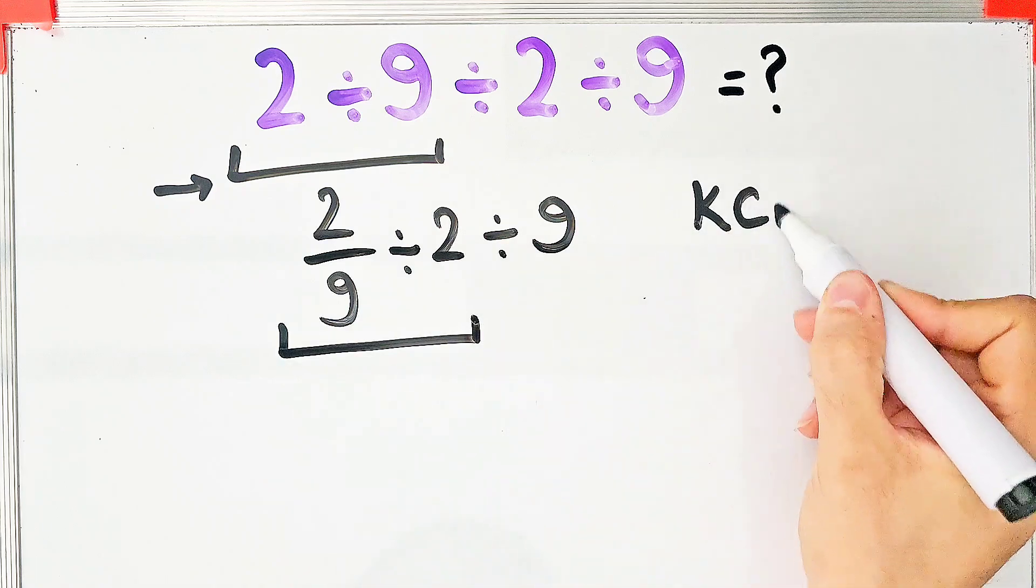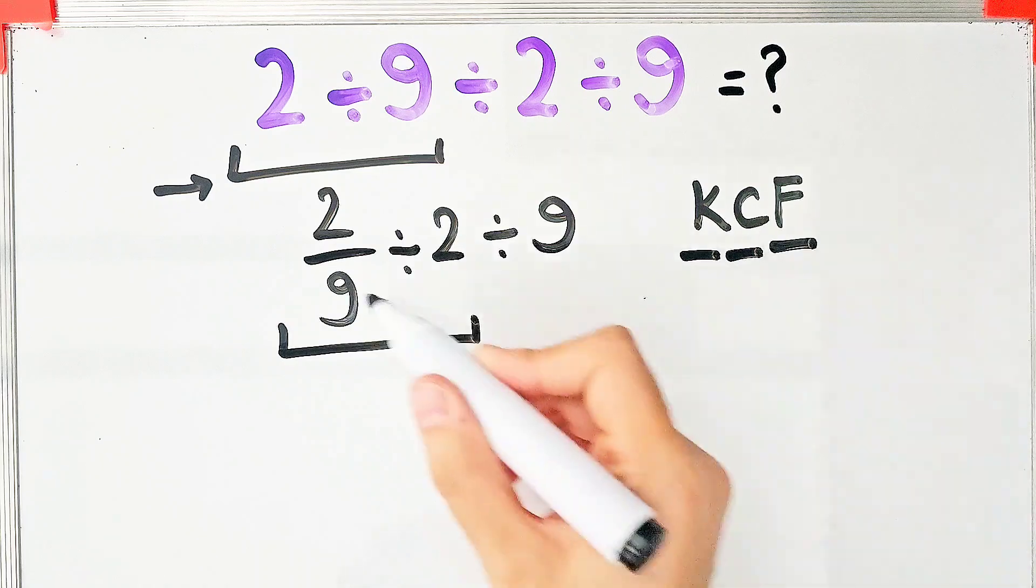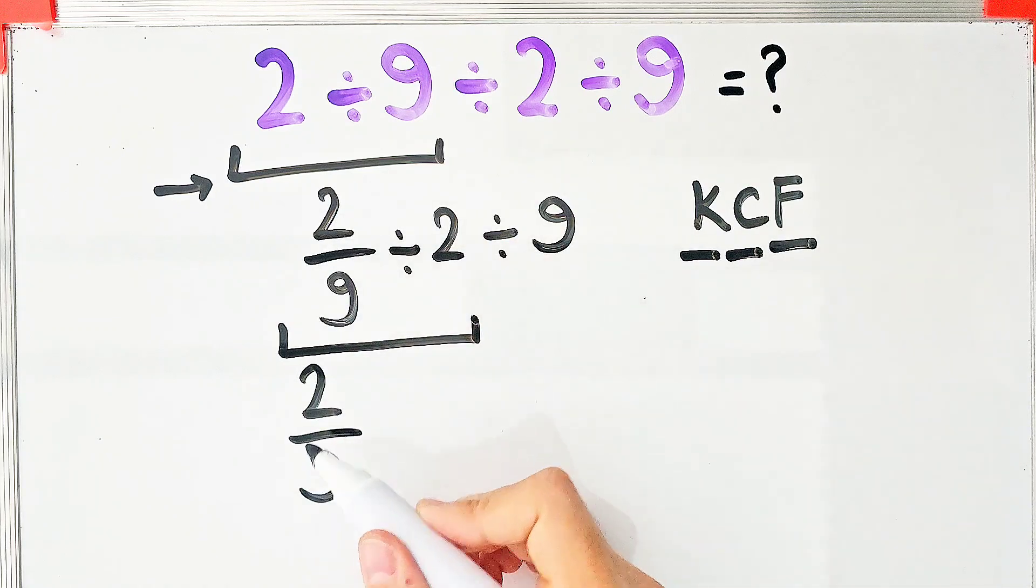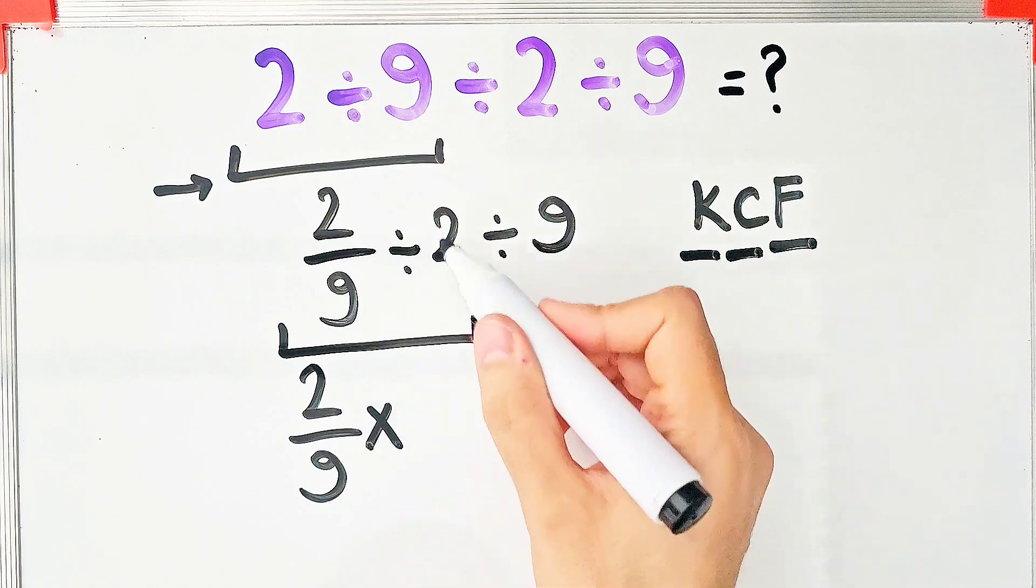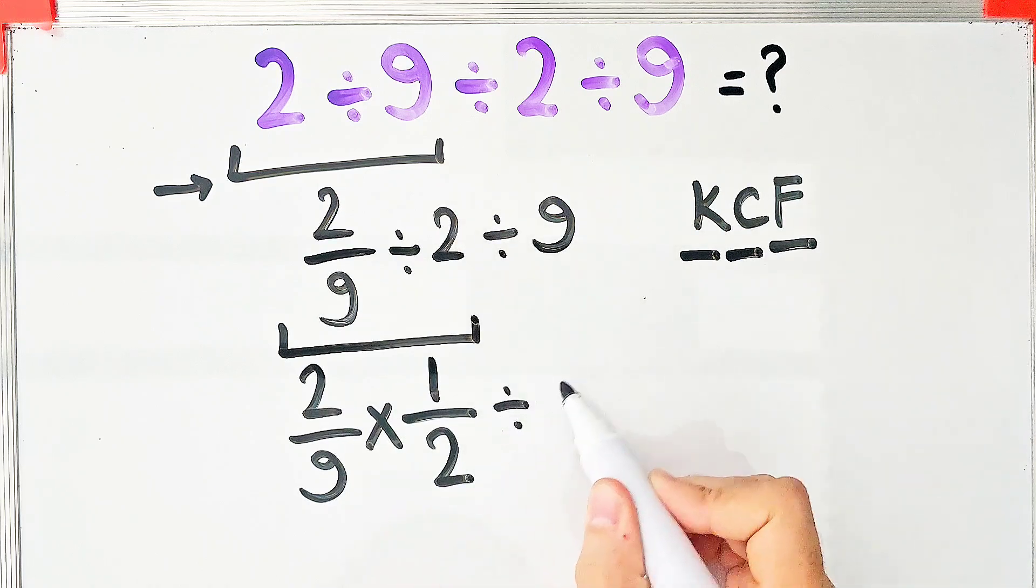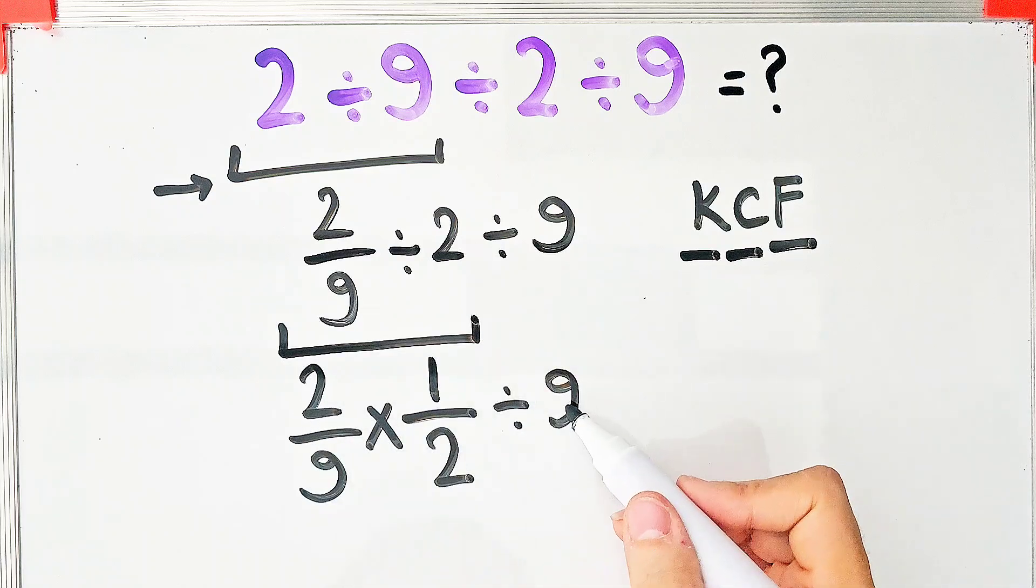To solve this part, we need to follow the KCF rule. In this rule, K stands for keep, C stands for change, and F stands for flip. We keep the first fraction as it is, then we change the sign. After that, we flip the second number. Now the question is 2 over 9 times 1 over 2 divided by 9.